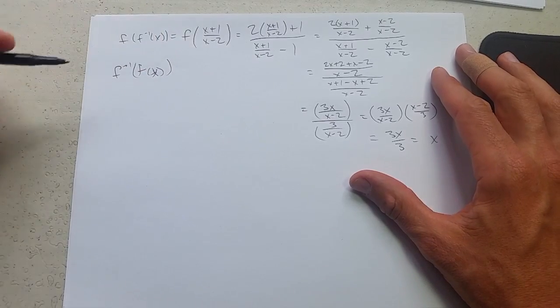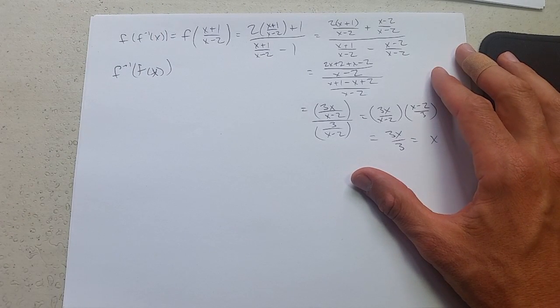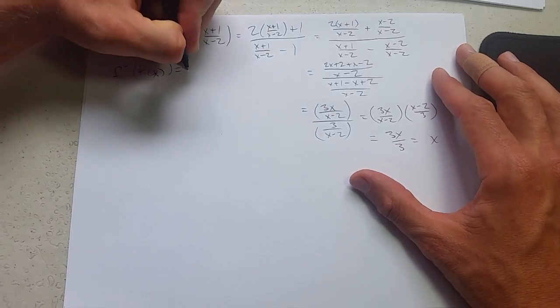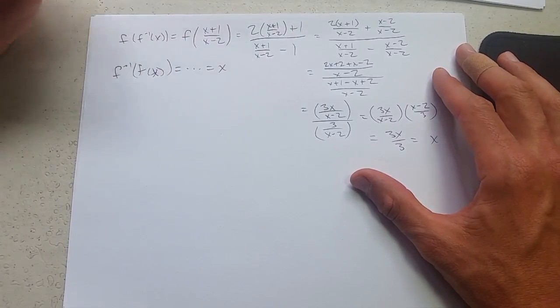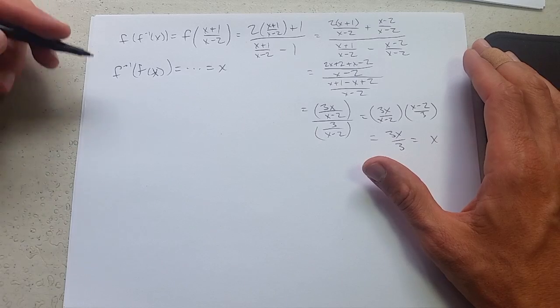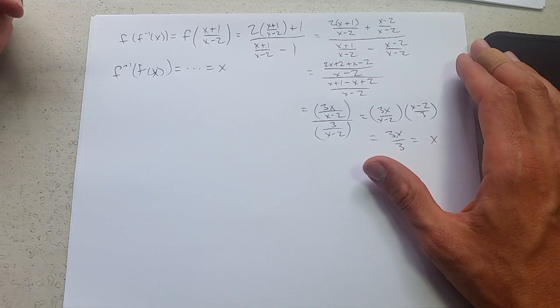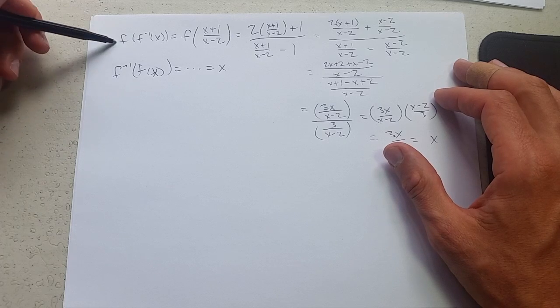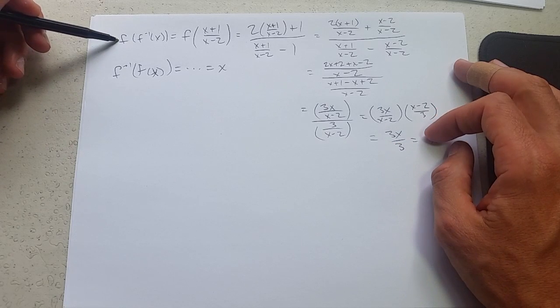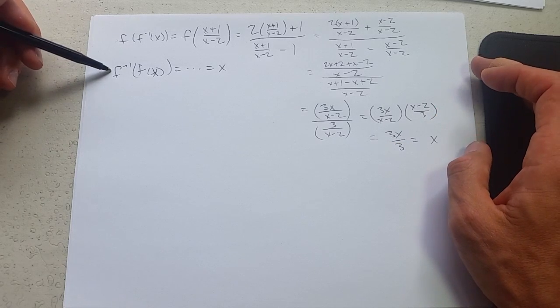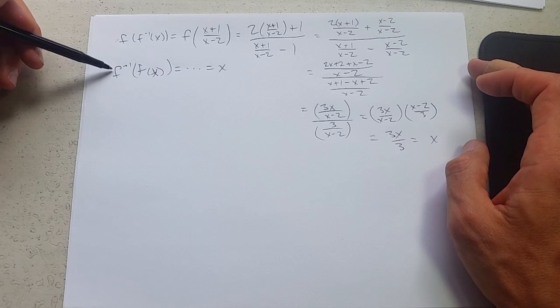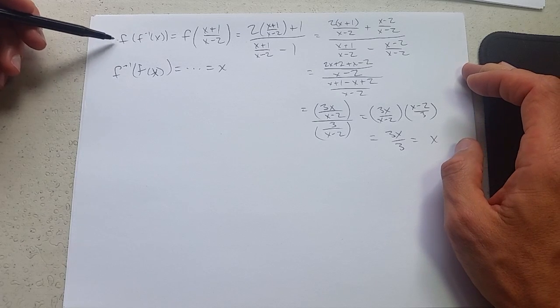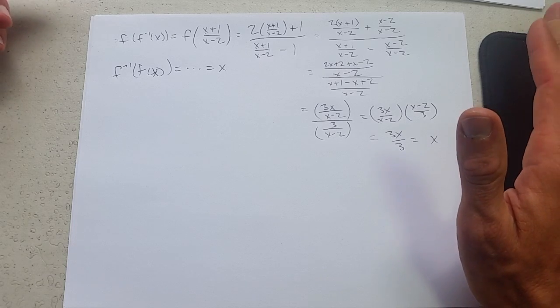To be fully sure, you can compose them the other direction and do a lot of work and you should come out with x. Now there's a lot of work that goes into this, so I'm only going to go and do this way right here. The chance that this works out to x and this doesn't is very close to zero. So if you do, you only really need to do one of the two.